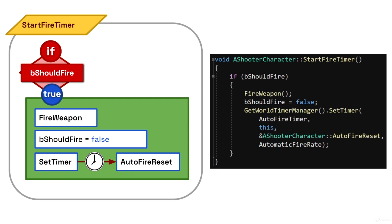Then we set the boolean B should fire to false. We use this boolean B should fire so that we can't spam the firing function — we can't continue to press our fire button as fast as possible and fire at an arbitrarily rapid rate. This B should fire boolean is set to false for the duration of the timer that we set. So we call set timer, and the callback for that timer is auto fire reset. It isn't until auto fire reset that we set B should fire back to true, and as long as that boolean is false, this if check in start fire timer prevents us from firing the weapon as fast as we'd like.